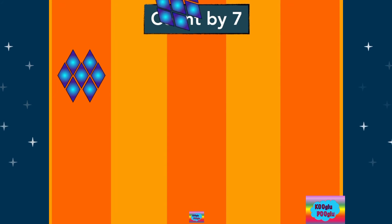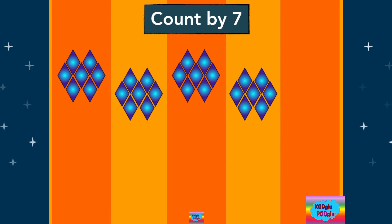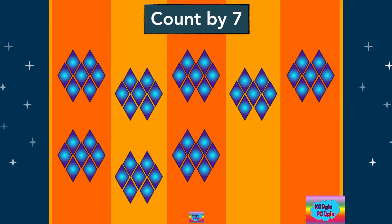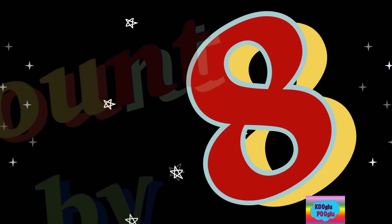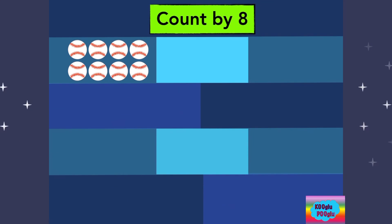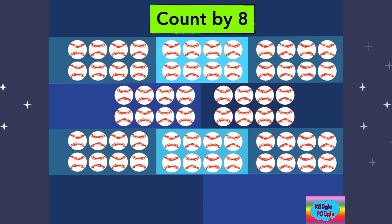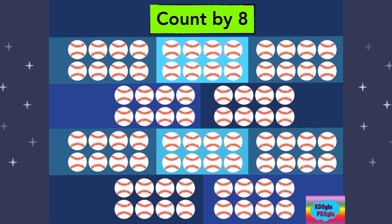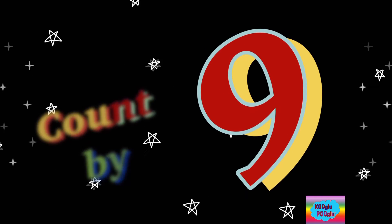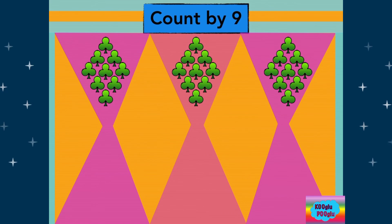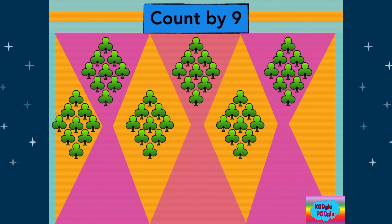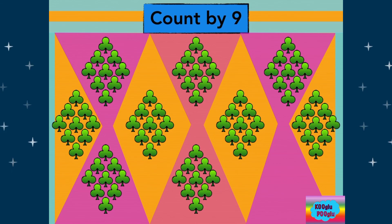Seven, fourteen, twenty-one, twenty-one, twenty-eight, thirty-five, forty-two, forty-nine, fifty-six, sixty-three, seventy. Eight, sixteen, twenty-four, thirty-two, forty, forty-eight, fifty-six, sixty-four, seventy-two, and eighty. Nine, eighteen, twenty-seven, thirty-six, forty-five, fifty-four, sixty-three, seventy-two, eighty-one, ninety, ninety.